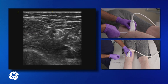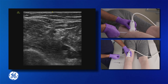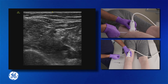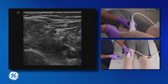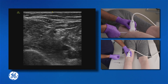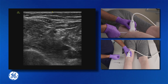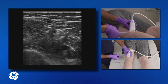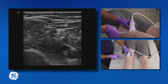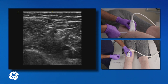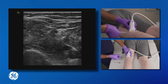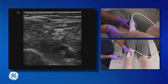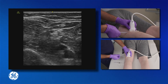Instilling 20 to 30 cc's of anesthetic around the nerve will result in a complete block of the sciatic nerve at this location and allow for proper anesthesia of the lower two-thirds of the leg.